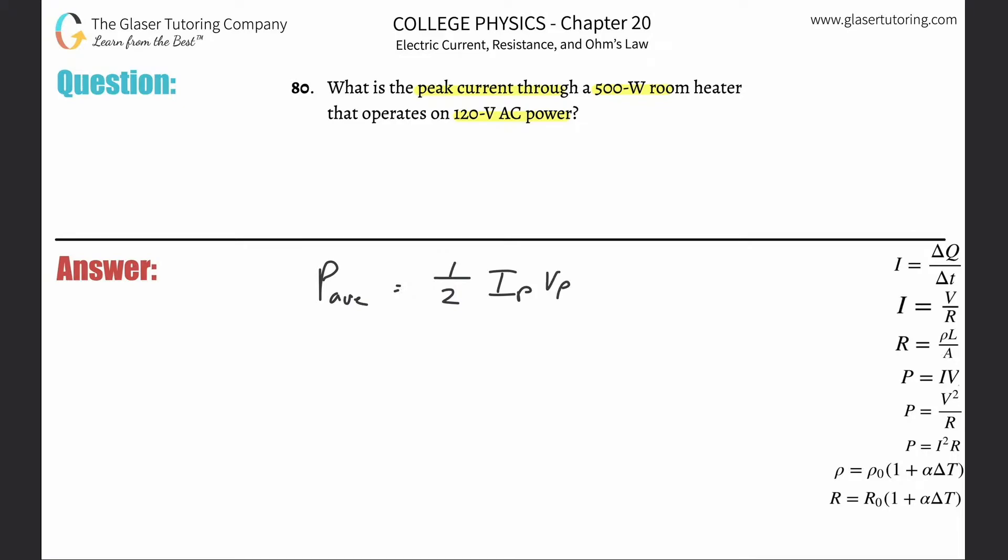Now this is the wattage of the room heater. By definition, they give you average values, so this represents the average. How would you know that? I have no idea, but now you do. So the average power here being consumed by the room heater is going to be 500 watts.